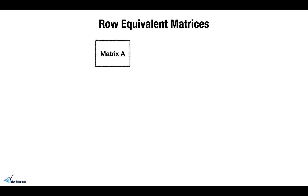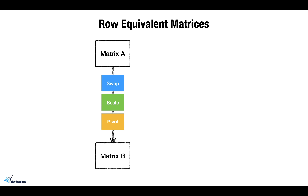To explain that, let's assume we have a matrix named A and you apply three operations to the rows of matrix A. These operations are called swapping, scaling, and pivoting. If you apply these operations — either simultaneously or separately — to the rows of matrix A, we get another matrix, and let's call that matrix B. These two matrices, matrix A and matrix B, are then called row equivalent matrices.